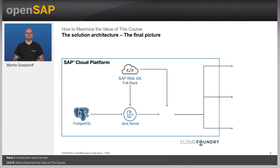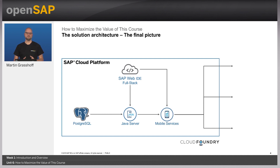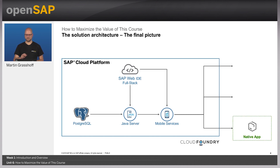Our architecture will consist of the three basic blocks we discussed already. We will have a back-end. This back-end we will create on our own as it is a full-stack application. It will be running a Java application that connects to a Postgres SQL server to store the data, and it will expose an OData service towards mobile services. We do so by using the SAP Web IDE, a cloud-based development tool, to create the Java application and manage the whole back-end system. And we use mobile services to connect to this Java application and expose the API to the mobile devices.